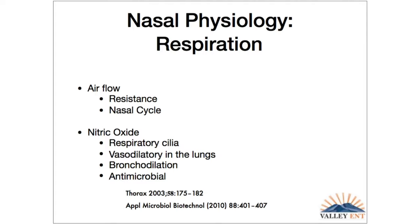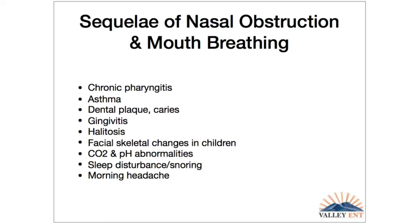We all intuitively know the sequelae of chronic nasal obstruction and mouth breathing, and these are all clear associations in the literature. These patients get chronic pharyngitis because they're drying out, losing the protective effect of IgA antibodies and enzymes that help fight bacteria. There's a clear association with asthma and reactive airway. Dental plaque and caries result from the drying effect — you lose the protective effect of saliva. These patients get gingivitis and halitosis. Chronic facial skeletal changes can occur. CO2 and pH abnormalities arise — these patients can get a chronic respiratory alkalosis and systemic vasoconstriction. Sleep disturbance, snoring, and morning headache are also associated.